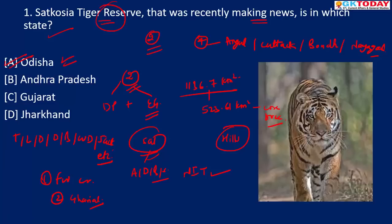Another important tiger reserve from Odisha state is Simlipal Tiger Reserve. The Indian government launched Project Tiger in which year? Answer would be 1973. And when do we observe International Tiger Day? That is 29th of July.